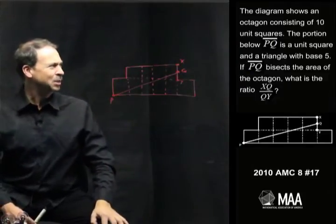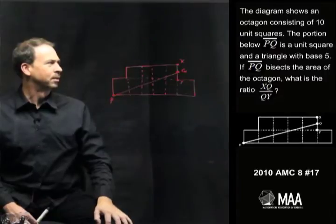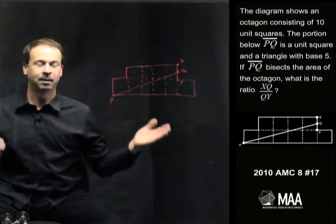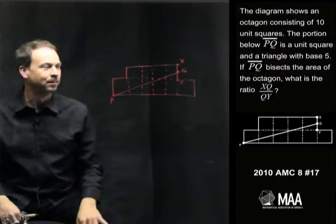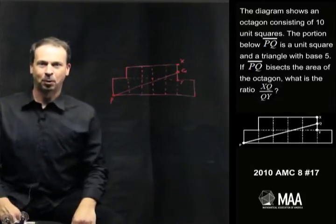And the question is, if PQ bisects the area of the octagon, what is the ratio XQ over QY? I just read it out loud. I have no idea what I just read.